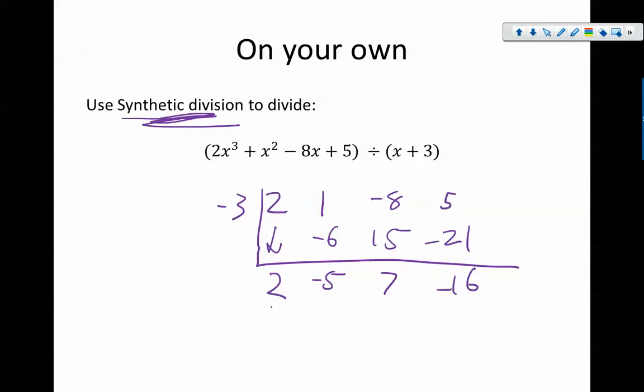2x squared, because we start 1 degree lower, minus 5x plus 7. This is my remainder: negative 16, or plus negative 16 over x plus 3.